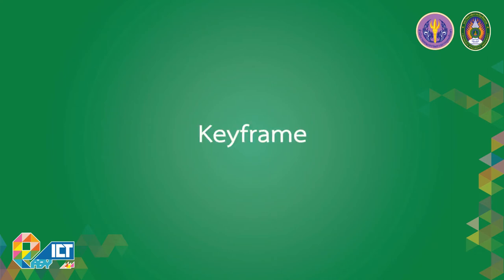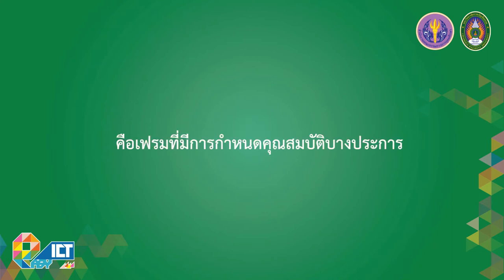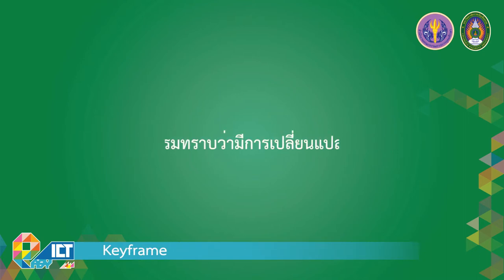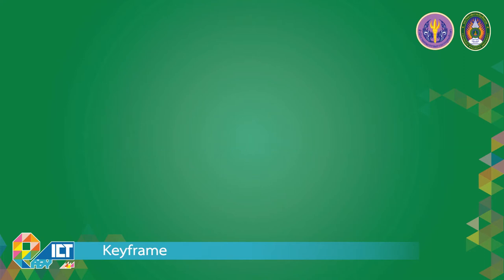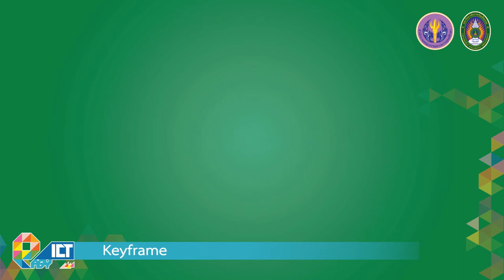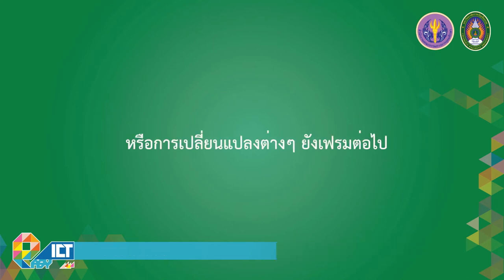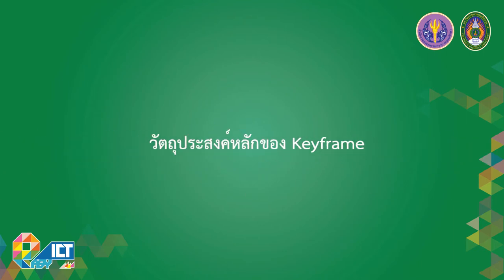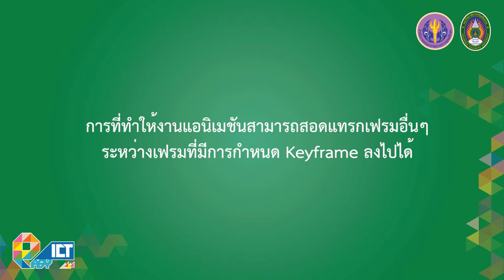Keyframes คือ Frame ที่มีการกำหนดคุณสมบัติบางประการ ที่ทำให้โปรแกรมรู้ว่ามีการเปลี่ยนแปลงคุณสมบัตินั้น และทำการจดจำเพื่อที่จะคำนวณการเคลื่อนที่หรือการเปลี่ยนแปลงต่างๆ ยัง Frame ต่อไป วัตถุประสงค์หลักของ Keyframes คือการที่ทำให้งาน Animation สามารถสอดแทรก Frame อื่นๆ ระหว่าง Frame ที่มีการกำหนด Keyframe ลงไปได้